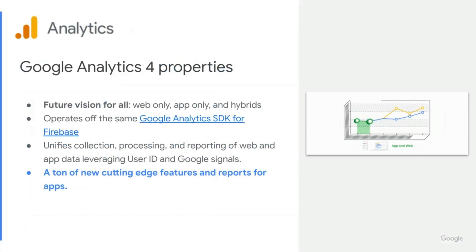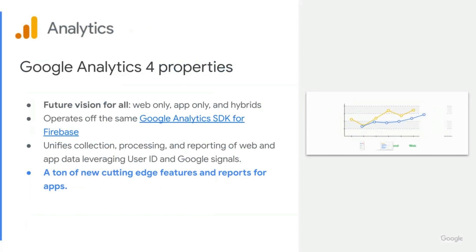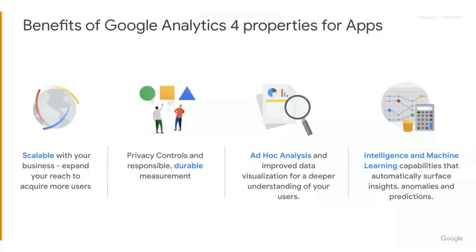In addition, there are a ton of new cutting-edge features and reports for apps specifically in the Google Analytics 4 property user interface. There are a ton of benefits of using Google Analytics 4 properties for apps. It's scalable for your business, it helps you expand your reach to acquire more customers, it has privacy controls and responsible, durable measurement. It provides ad hoc analysis and improved data visualization for a deeper understanding of your users. And Google Analytics 4 properties bring in intelligence and machine learning capabilities that automatically surface insights, anomalies, and predictions.